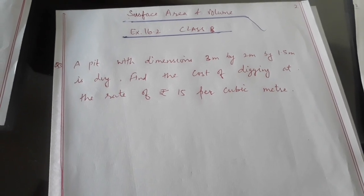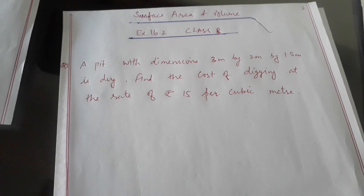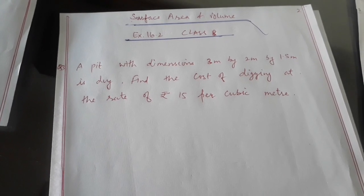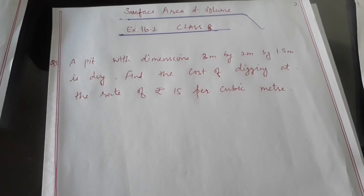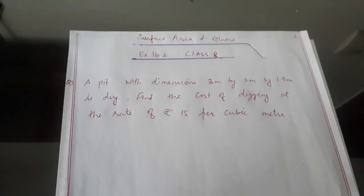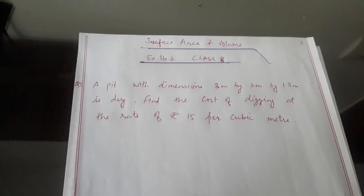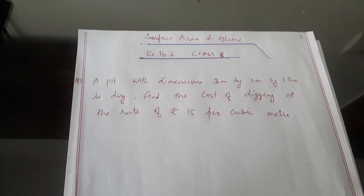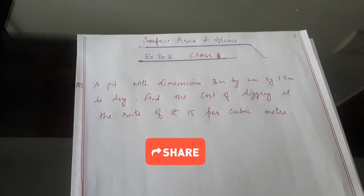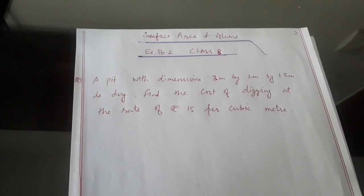Before solving question number 3, I want to remind you that I have solved many questions and many chapters of Mathematics Success of Goel Brothers and Exploring Mathematics of Goel Brothers. If you want the solutions of those chapters, you can visit the description of this video where all the links of the respective playlists are given. Now question number 3 is: a pit with dimensions 3 meters by 2 meters by 1.5 meters is dug. Find the cost of digging at the rate of rupees 15 per cubic meter.